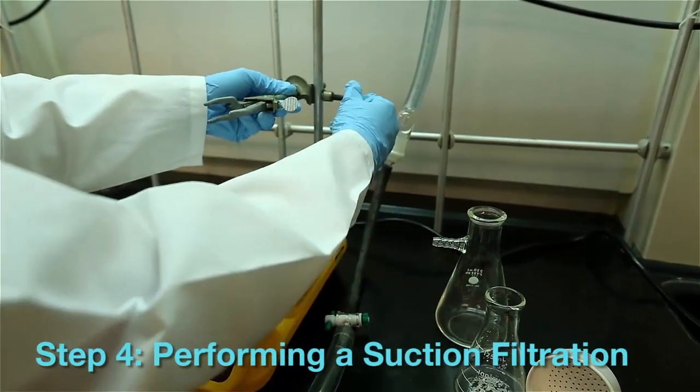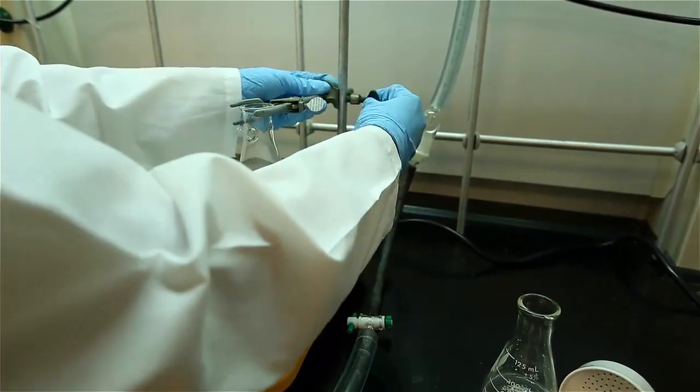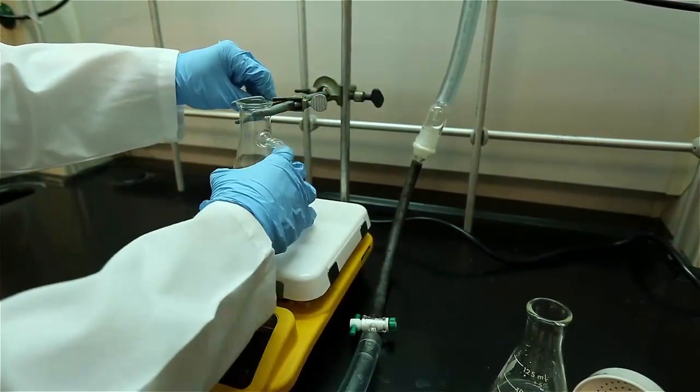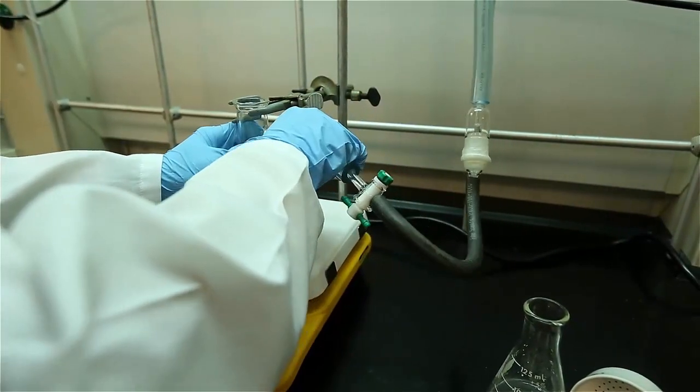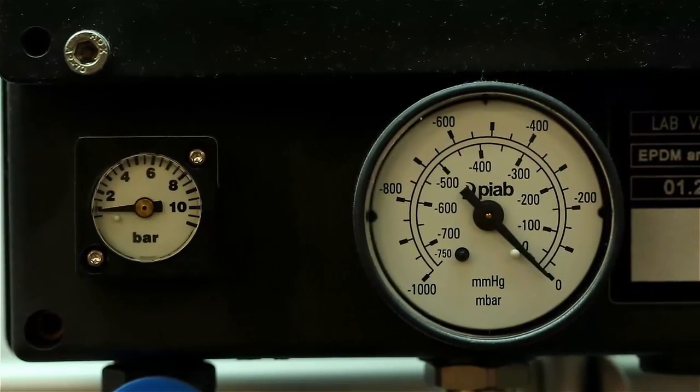Now that your crystals are formed, the final step is to isolate the product. For the setup, high pressure compressed air is used in the Venturi pumps to generate vacuum, so for your safety, be sure to not exceed the recommended pressure of 6 psi. Be sure that the apparatus is fully secured with clamps.